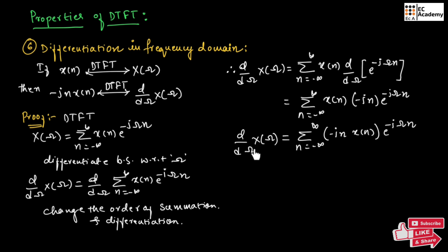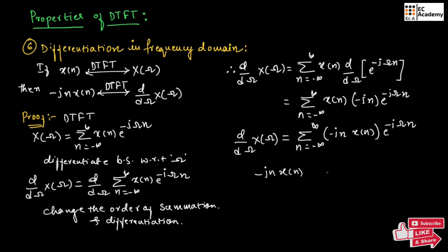Let us write the above equation as summation of n equals minus infinity to infinity of minus j n first, then x of n into exponential to the power of minus j omega n, which is nothing but d by d omega of x of omega. Now, if we compare this equation with the standard DTFT equation, we can say that for minus j n x of n, if we perform DTFT, we will obtain d by d omega of x of omega. This is the proof.